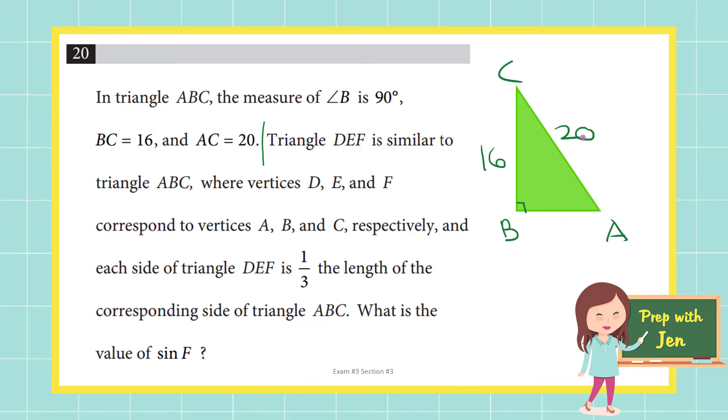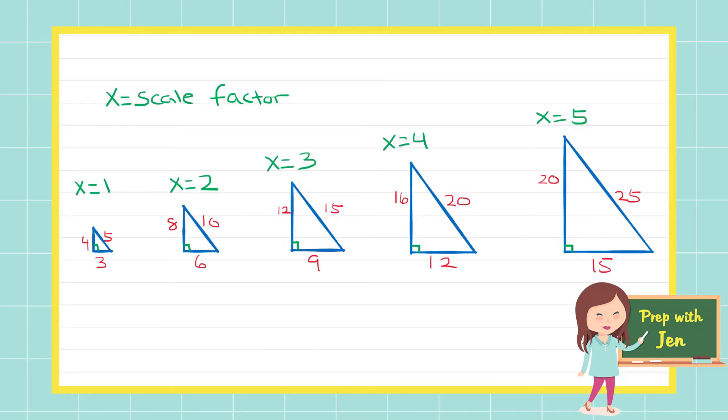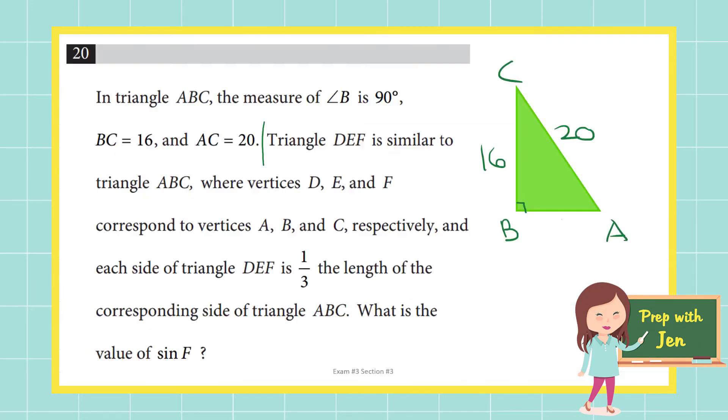If you took a look at the chart I gave you earlier hopefully you'll recognize hypotenuse of 20, long leg of 16, this is nothing more than a scaled version of that 3-4-5 right triangle. It is this one right here where x is equal to 4. So that means I already know the length of AB is going to be 12. I don't need to mess with the Pythagorean theorem and risk making an arithmetic mistake.